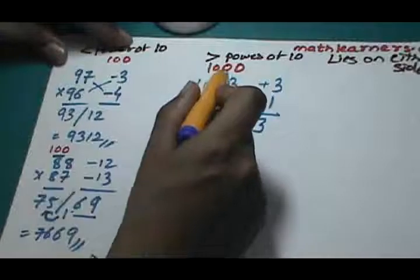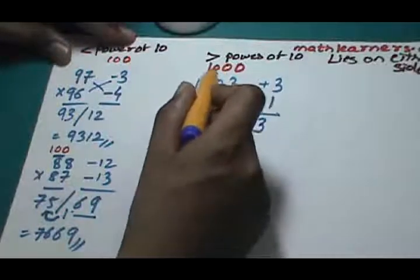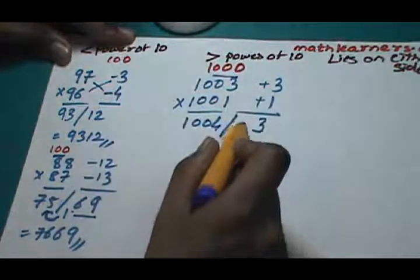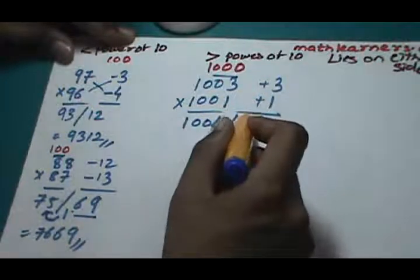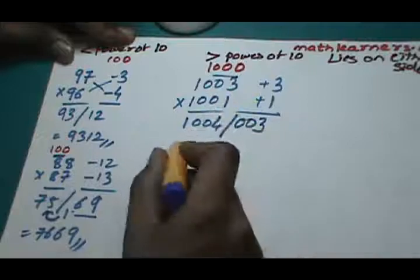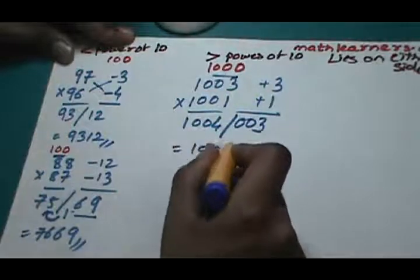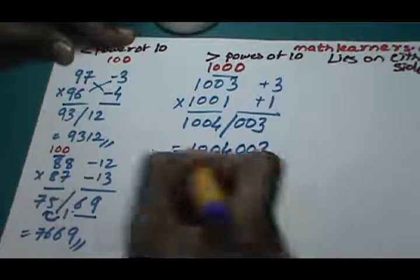As we had taken base as 1000 which has 3 zeros, we need to have exactly 3 digits on the right hand side. So we will have to append 2 zeros. So the final answer is 1004003.